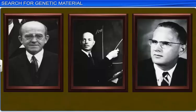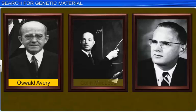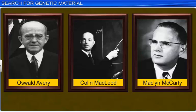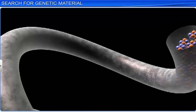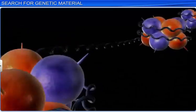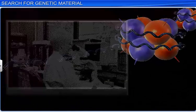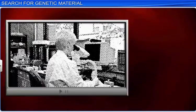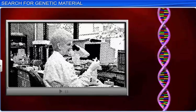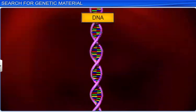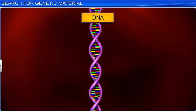Thus, through their experiments, Oswald Avery, Colin McLeod, and Macklin McCarty concluded that DNA is the hereditary material in most living organisms. Nevertheless, many biologists were still unconvinced that DNA is the hereditary material, and so the search for genetic material continued for several years, and was concluded with the discovery of DNA.